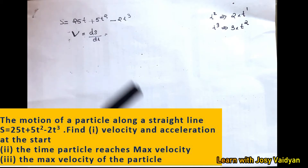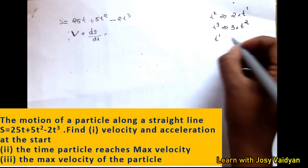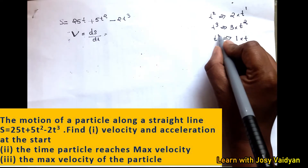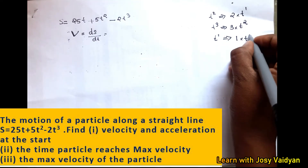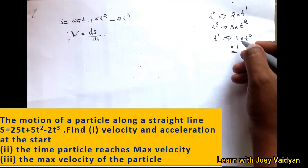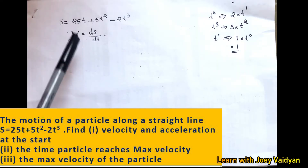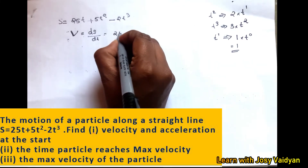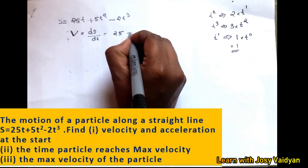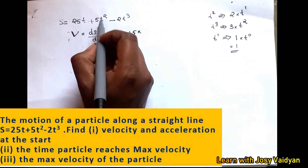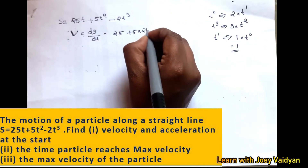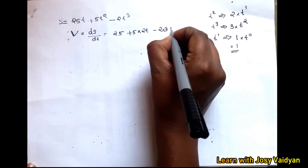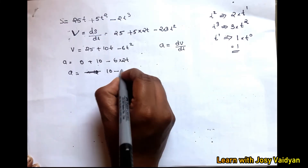Differentiating the constant term: d/dt of t is 1, and t to the power 0 is 1. So differentiating the full displacement equation: 25t gives 25, plus 5t squared gives 10t, minus 2t cubed gives 6t squared. Therefore the velocity equation is v = 25 + 10t − 6t². Differentiating again, the acceleration equation is a = 10 − 12t.